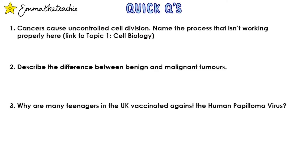Let's test what you've understood. Pause the video and try these quick questions, then press play when you want to mark them together. Number one: cancers cause uncontrolled cell division — name the process that isn't working properly here. This is a link to topic one, cell biology. The answer would be mitosis.